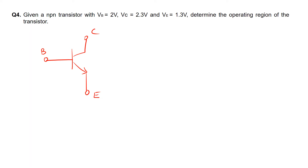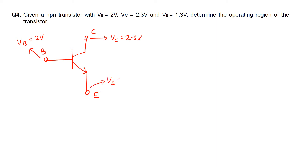The voltage at the base side, so this is the base here, VB with respect to ground is 2 volts. The voltage at the collector side, which is VC with respect to ground — VC refers to this point at the collector — is 2.3 volts. And VE, the emitter voltage at the emitter side, is 1.3 volts.